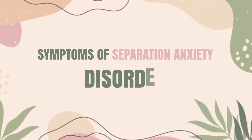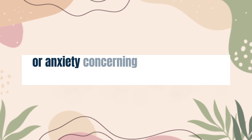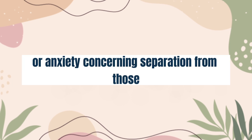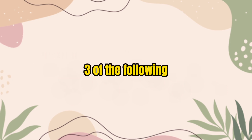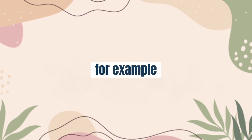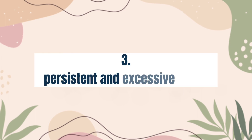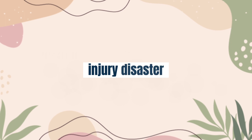Let's discuss the symptoms of separation anxiety disorder according to the DSM-5. There must be developmentally inappropriate and excessive fear or anxiety concerning separation from those to whom the individual is attached, as evidenced by at least three of the following. First: recurrent excessive distress when anticipating or experiencing separation from home or from major attachment figures. Second: persistent and excessive worry about losing major attachment figures or about possible harm to them, such as illness, injury, disaster, or death.